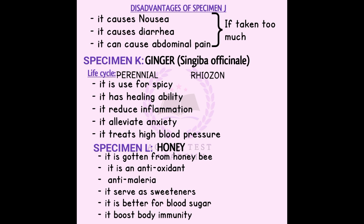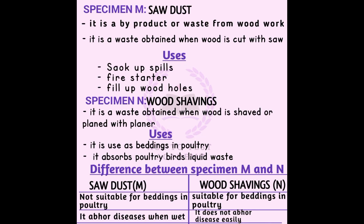Specimen L is honey. Honey is obtained from the honey bee. It is an active anti-oxidant and is also anti-malarial. It is naturally sweet and is a better blood sugar option for diabetics who cannot take regular sugar. It also boosts the body's immunity.